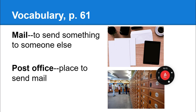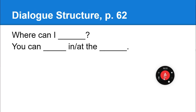Vocabulary, page 62. Mail — it means you send something to someone else. Post office — that's a place to send your mail. Dialogue structure: 'Where can I do something?' Where can I mail a letter? Where can I watch a movie? Where can I read a book? You can read a book in the library. You can watch a movie at the cinema. You need to know this sentence structure for your test.